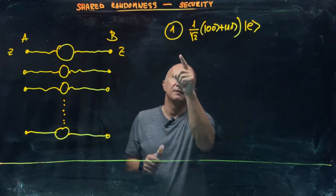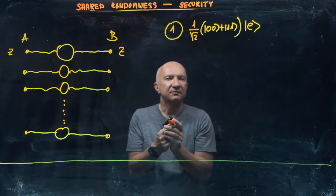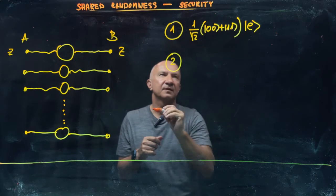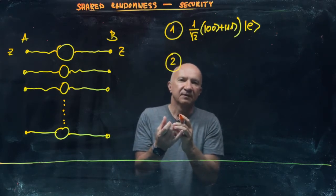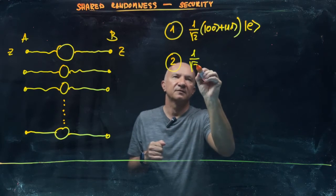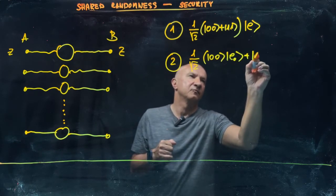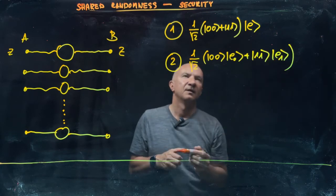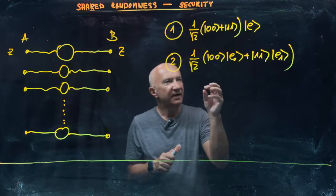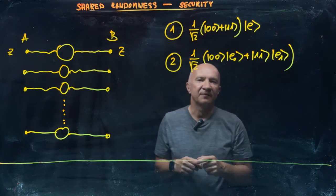But then there's another scenario in which Eve is really trying to learn whether the outcome of the z measurement will be zero or one for Alice and Bob. In this case, she can prepare the state in which she entangles her own device or the preparation device or whatever probe she has, and create a state of this form: 1 over square root of 2, |00⟩ tensor |e0⟩ plus |11⟩ tensor |e1⟩. Now assume that e0 and e1 are orthogonal. In this case, if you look at the state, Eve has knowledge of what kind of values Alice and Bob register when they perform the measurement.